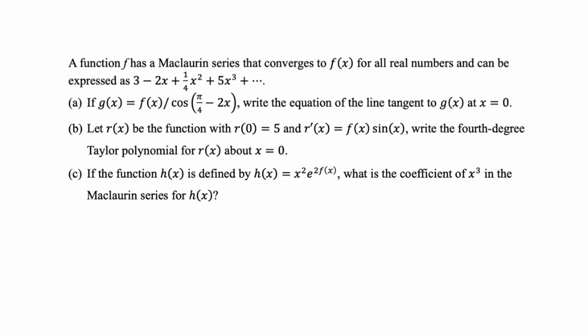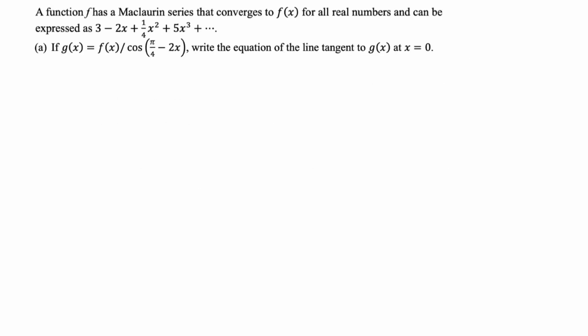These are pretty common for free response questions on the BC calc exam, and that's why I wrote this problem. So first up: g(x) is f(x) over cosine(π/4 minus 2x). We want the equation of the tangent line, so we're going to need the value of the function and the value of the first derivative. We need g(0), which is f(0) divided by cosine of π/4.